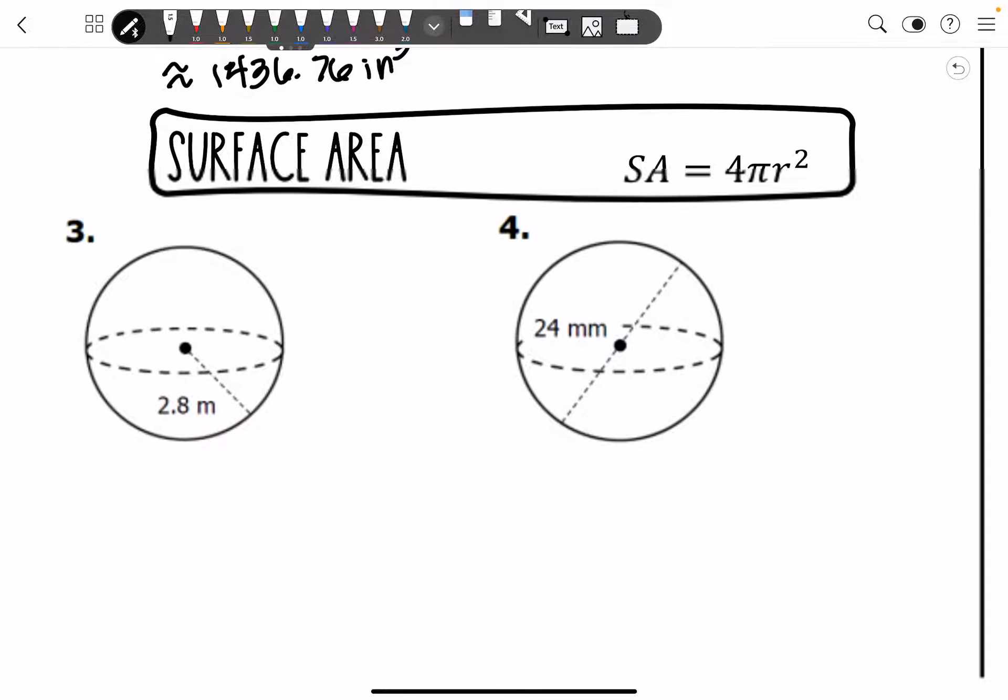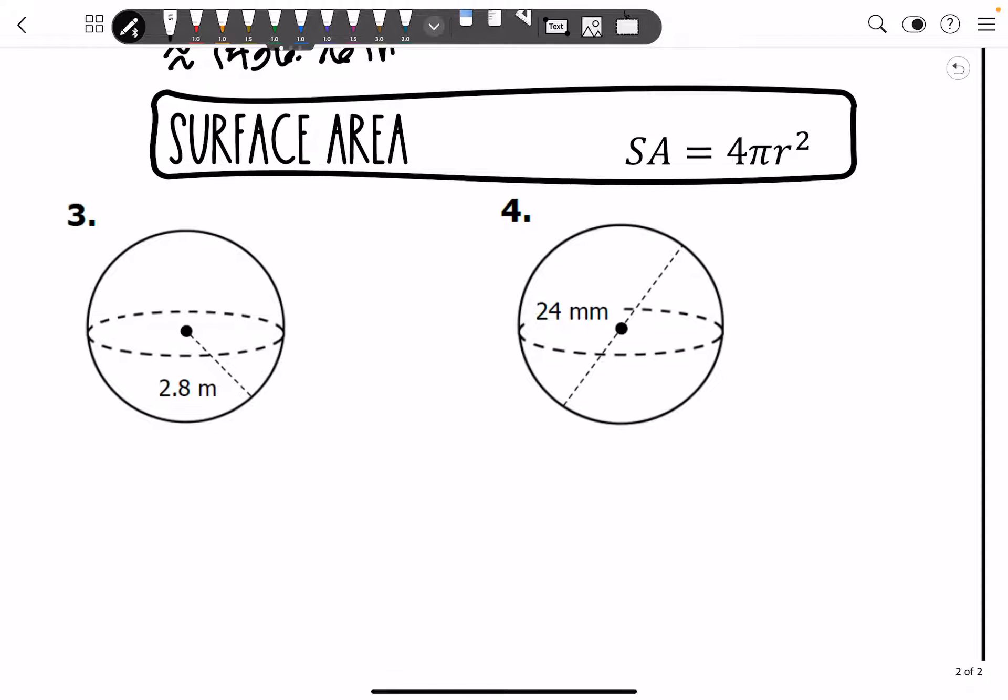Next, you're going to find surface area. And surface area is a whole lot easier to work with in terms of your numbers. It's just 4 pi r squared. It's the same thing. You only need your radius.